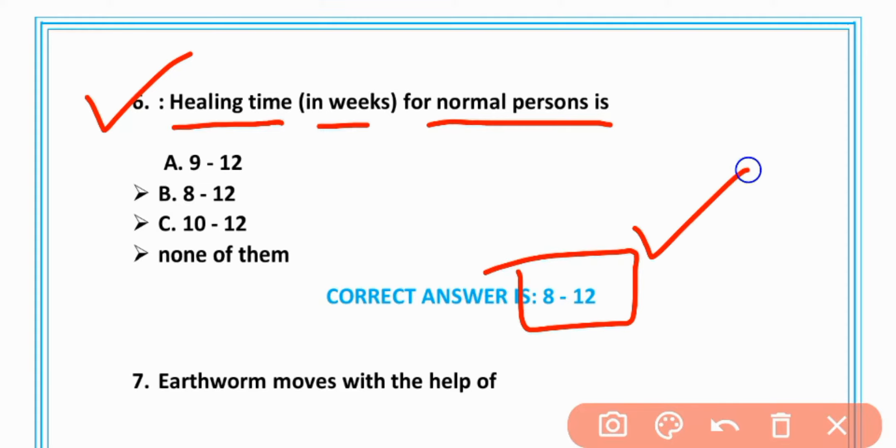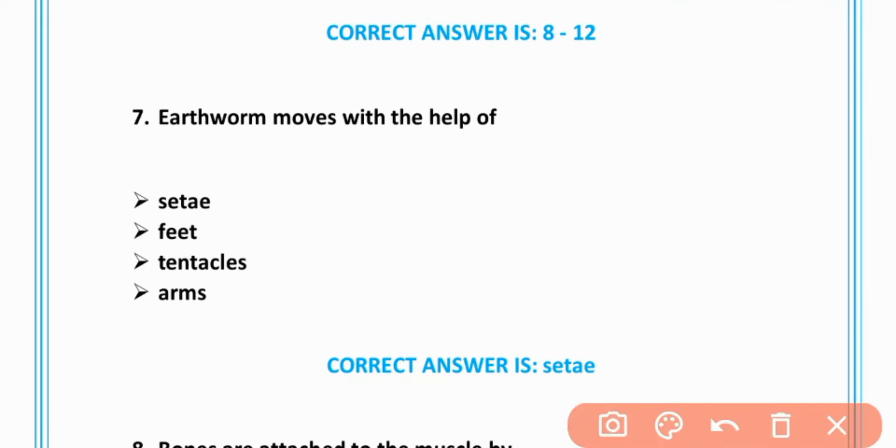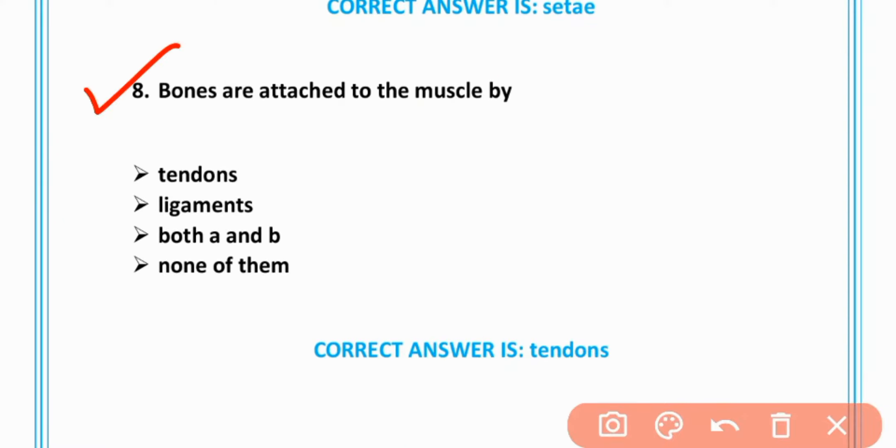MCQ number 7: Earthworm moves with the help of setae, option A is correct. MCQ number 8: Bones are attached to muscles by tendons, option A is correct.